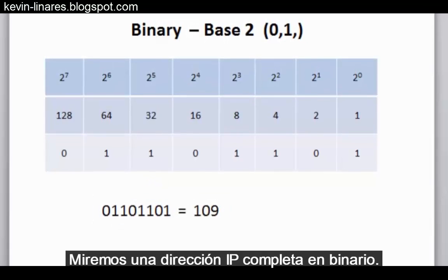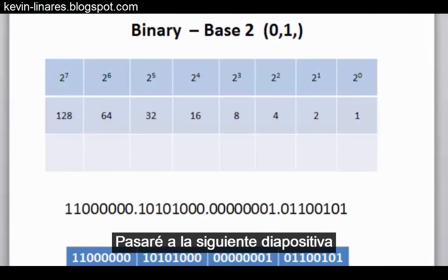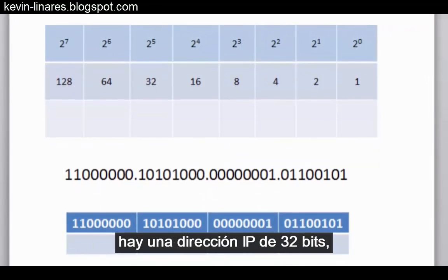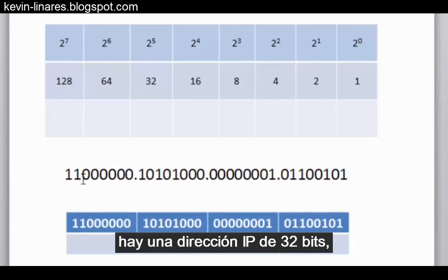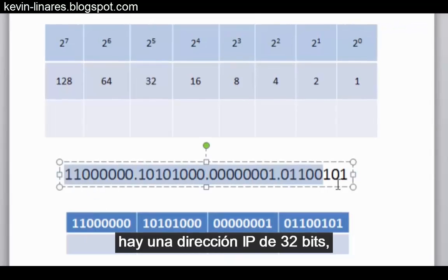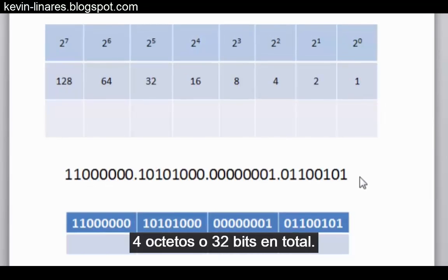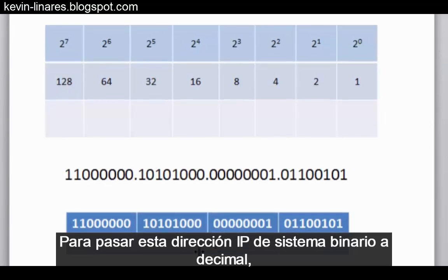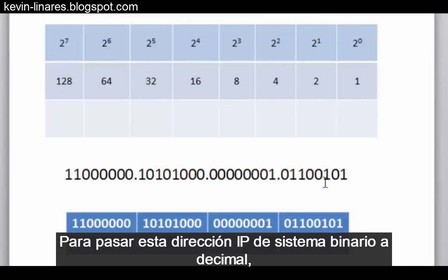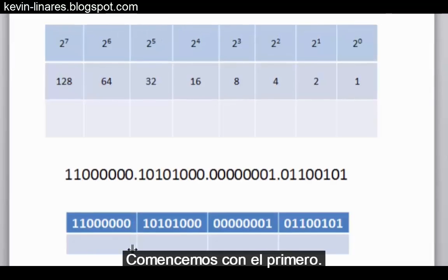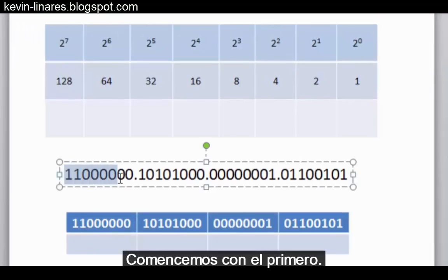Now let's look at a full IP address in binary. I'll go to my next slide. And you can see in this next slide, I now have a 32-bit IP address, 4 octets, or 32 bits total. If I want to convert this binary IP address to decimal, all I need to do is count up each individual octet. Let's start with the first one.